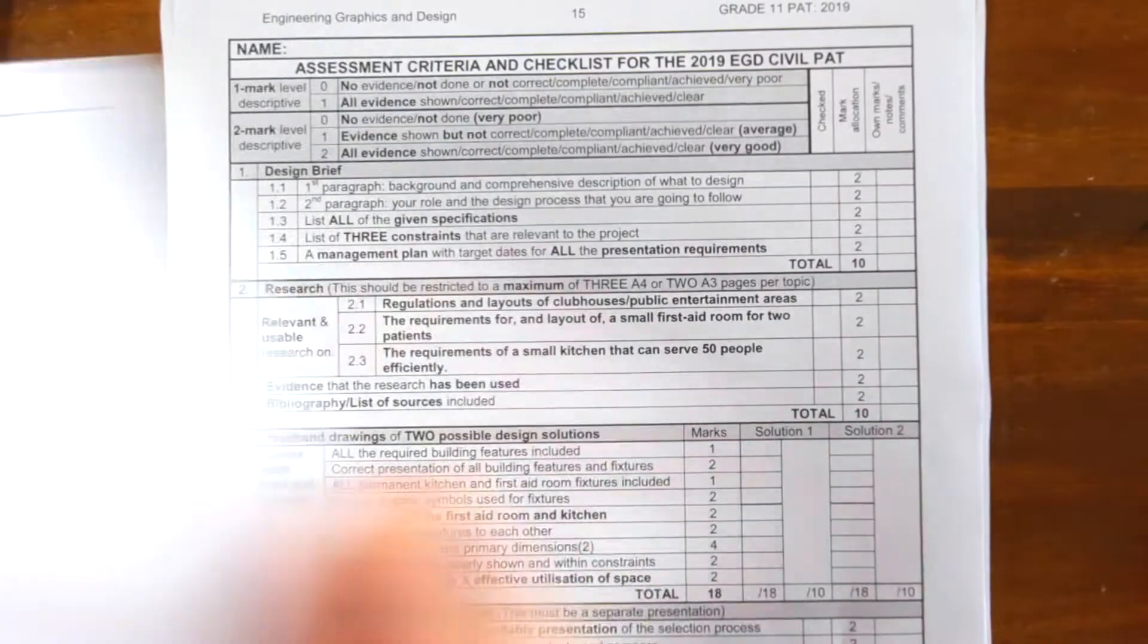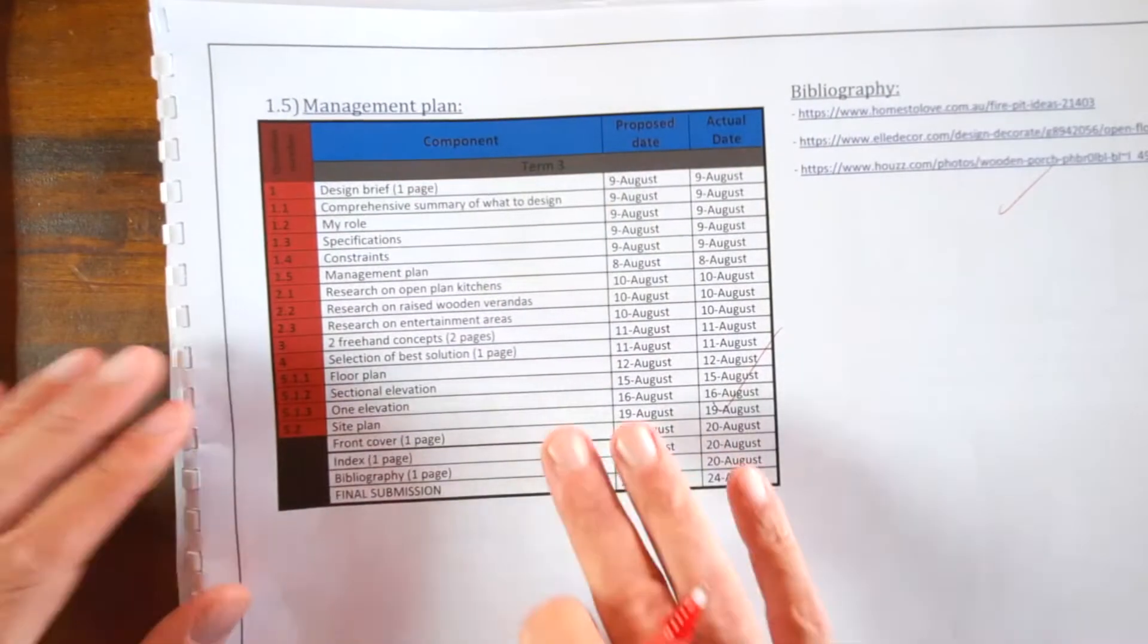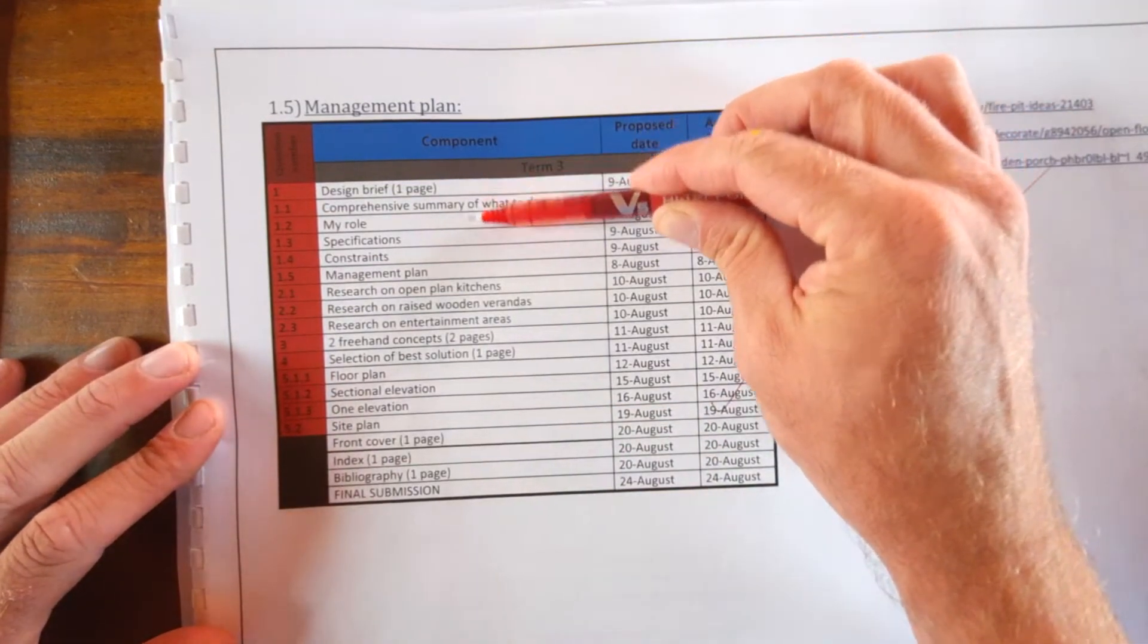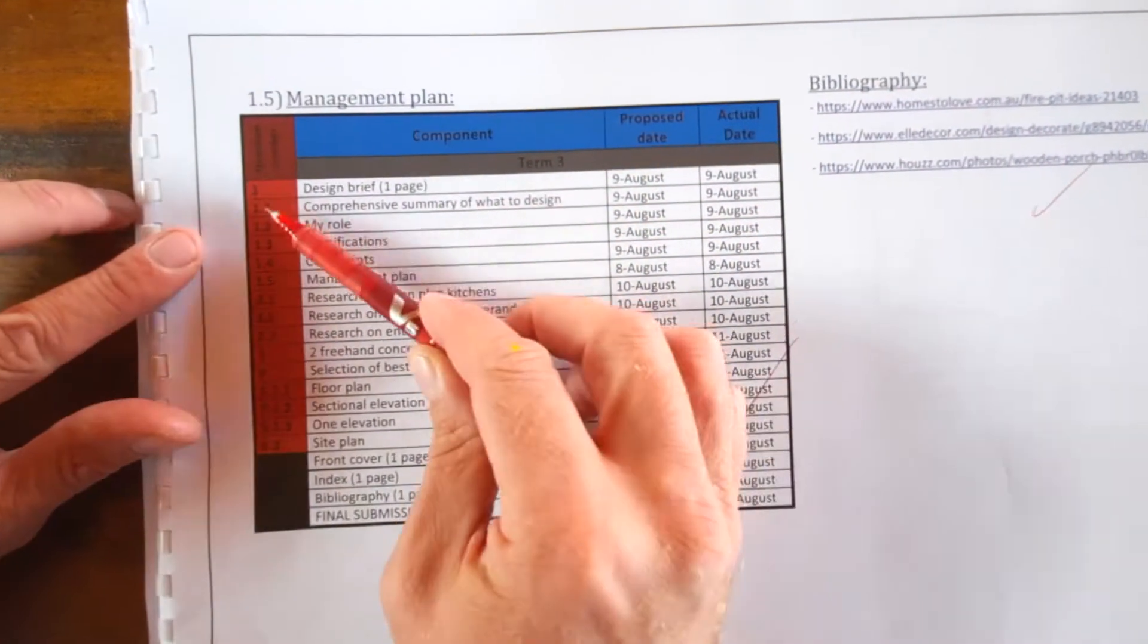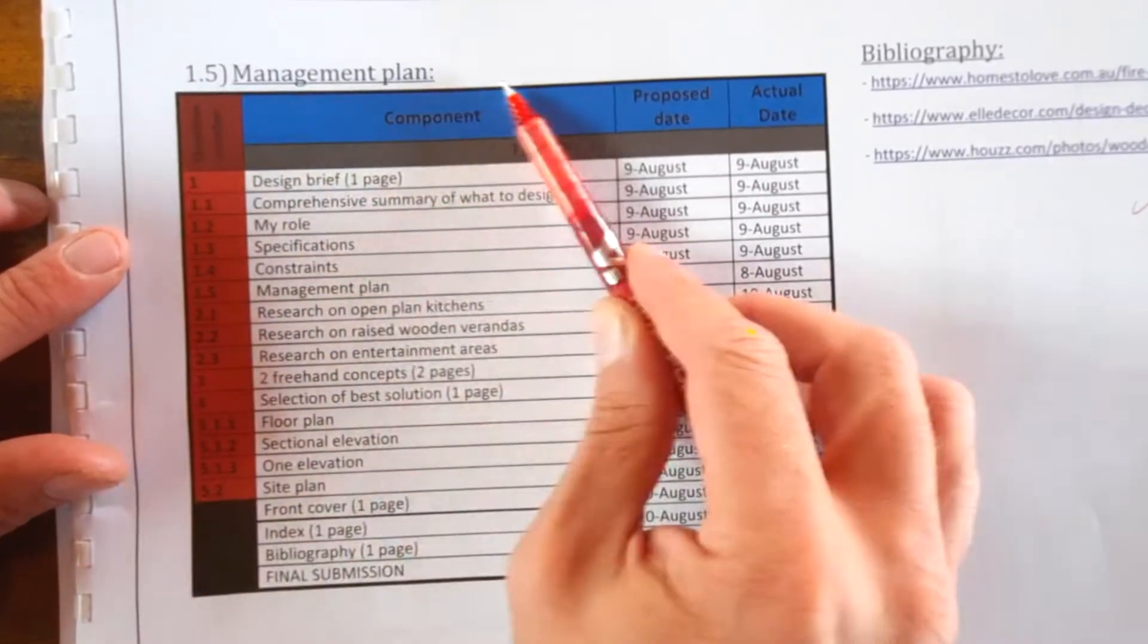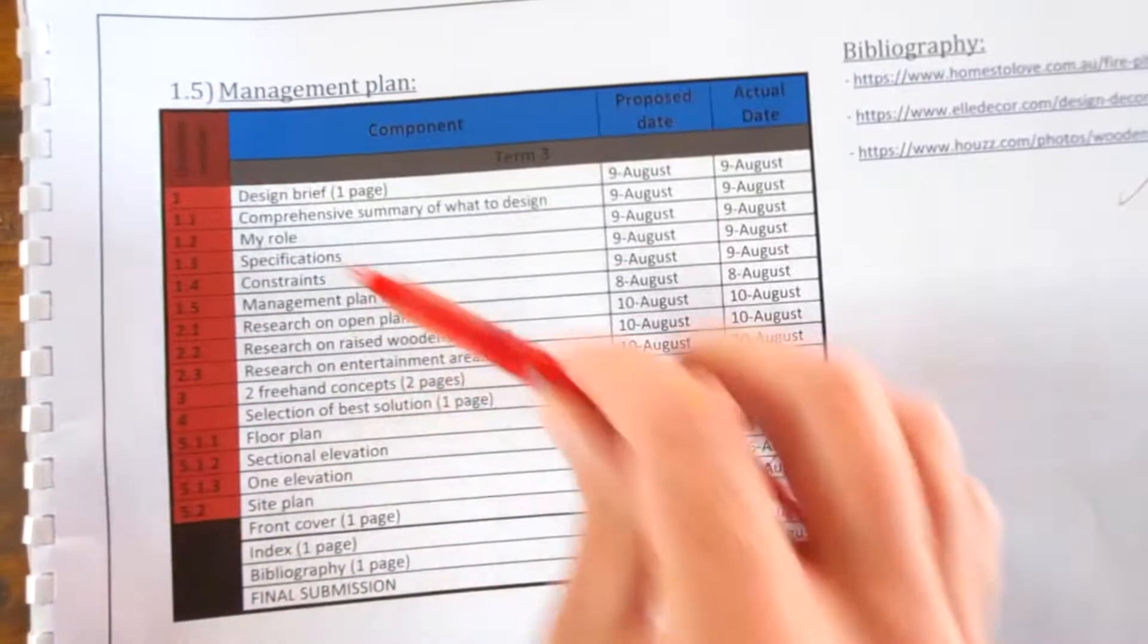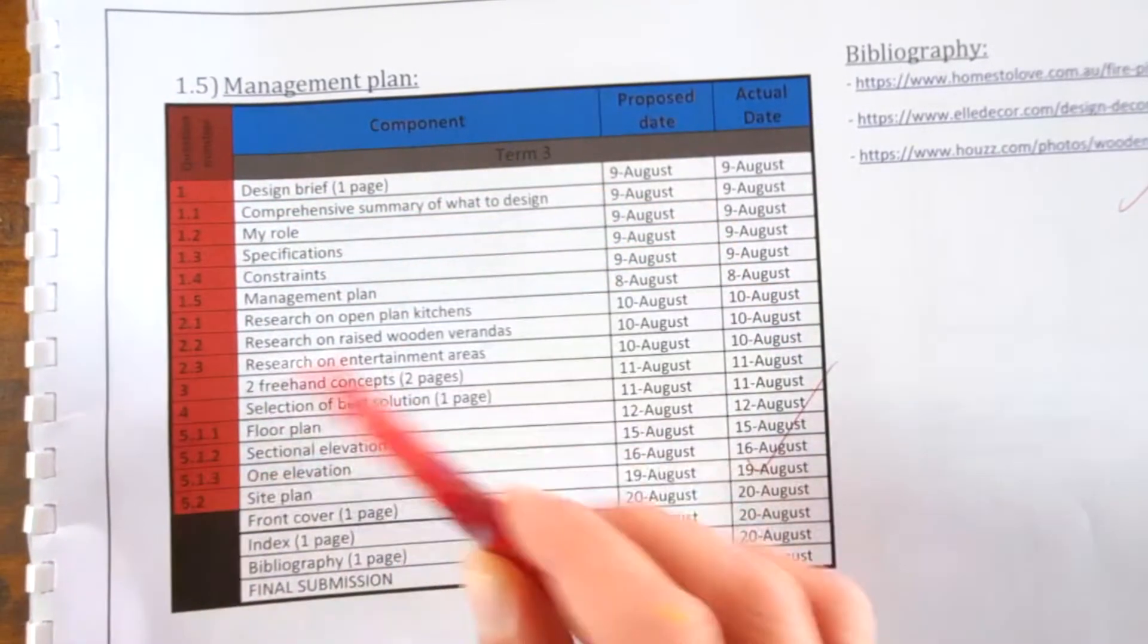Let me show you a management plan quickly. Of course this is just an example—you can go and prepare your own. But it's a list of the different design requirements, and this learner actually titled it again 1.5, the same as on this document: management plan. And then the numbering is the same.